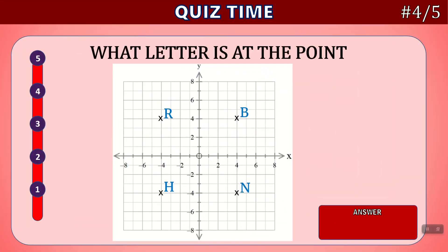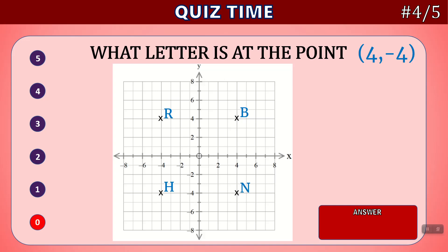Question four. What letter is at the point four comma minus four? Time's up. The answer is N. Let's look at the first number, which is the x-value — four. So if I go to the x-axis, here is the four, that's a positive four. And then the second value is the y-value, which is minus four. So if we look on the y-axis, minus four is located here. And where they intersect is N.